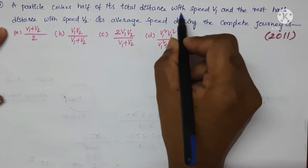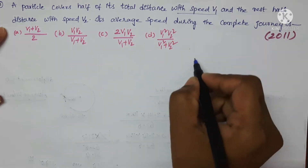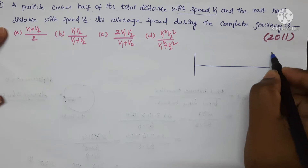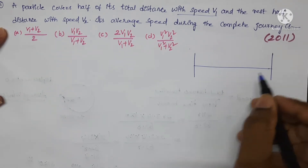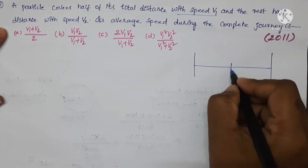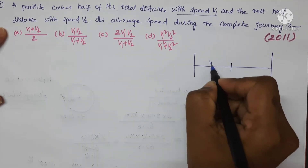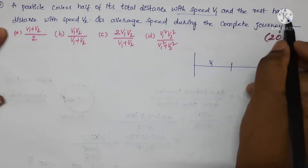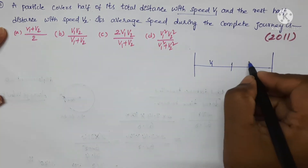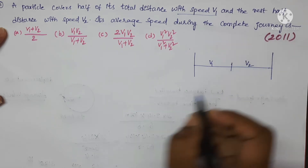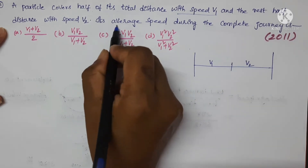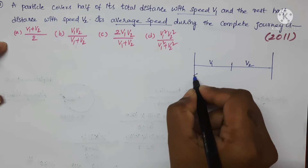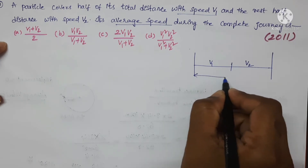A particle covers half of its total distance with a speed v1. See here, this is the total distance covered by a particle. In that first half of the distance it was covered with speed v1, and the rest half of the distance it covered with speed v2. Find the average speed.